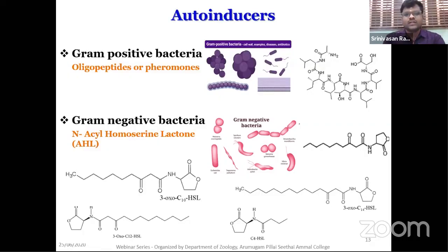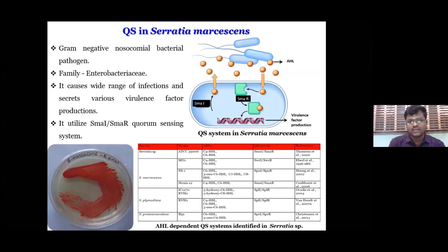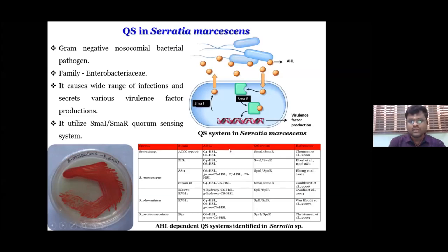Quorum sensing was first discovered by Bonnie Bassler, the pioneer of quorum sensing, who discovered it in 1983 in Vibrio fischeri. She initially studied Serratia marcescens, which causes a wide range of infections by secreting various virulence factors. Serratia marcescens regulates prodigiosin pigment production — a pinkish pigment — under the control of quorum sensing. We can use this prodigiosin production in Serratia marcescens for screening QS inhibitor compounds. This table represents the QS-regulated virulence factors produced by Serratia marcescens.